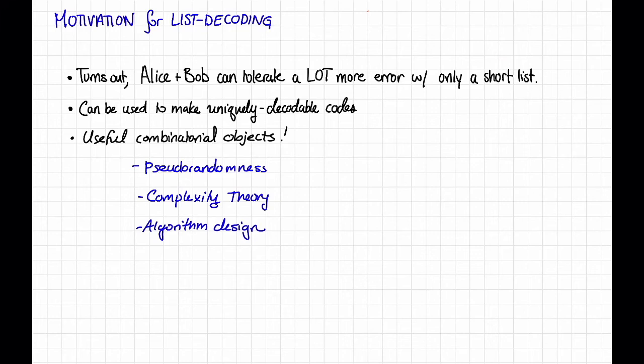But beyond communication, it turns out that list decodable codes are just really useful combinatorial objects. They have applications in pseudorandomness, complexity theory, and algorithm design, just to name a few. We may see some of these connections in later videos.